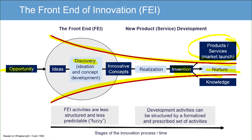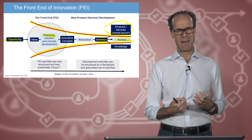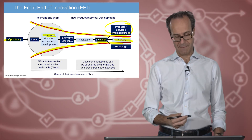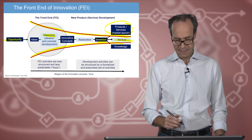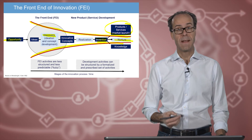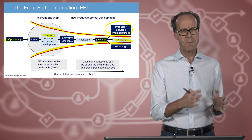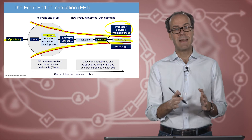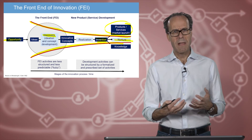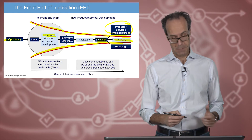Why is it important to differentiate between these two sets of activities? The front end activities are less structured and less predictable — this is why they are often called fuzzy, the fuzzy front end of innovation. We are not really sure what to do at this stage. While development activities can be structured by formalized and prescribed sets of activities — that's the typical idea of the stage gate process — once we are in this process, we really can execute it with rigor and with increasingly less risk.